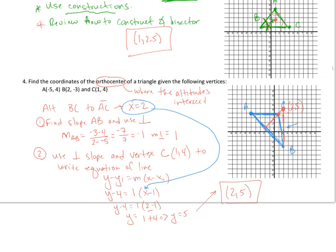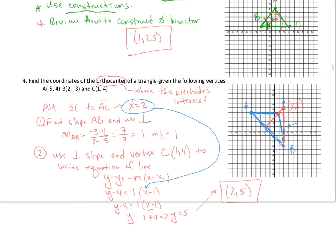I hope that helped. These questions weren't too bad because one of the altitude equations was simple — either vertical or horizontal, making it easy to solve. If that weren't the case, you'd have two equations to solve simultaneously for the x and y values. Good luck.